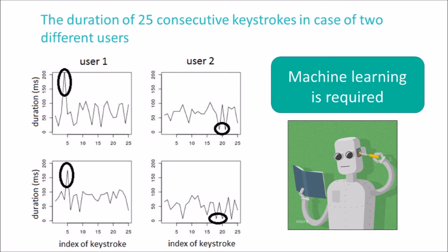The reason why person identification based on keystroke dynamics works is that our dynamics of typing is characteristic to us, and one is hardly able to mimic another person's dynamics of typing. Although the dynamics of typing is characteristic to users, it's clear that one cannot type always exactly with the same dynamics. In this figure, we can see the durations of the first 25 keystrokes from two different users who type the same text two times.